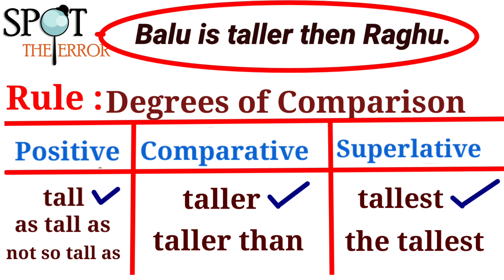The three degrees of comparison are: the positive degree, the comparative degree, and the superlative degree — tall, taller, tallest. Positive degree: tall. Comparative degree: taller. Superlative degree: tallest. Tall, taller, tallest — this is basic, this is a normal thing.